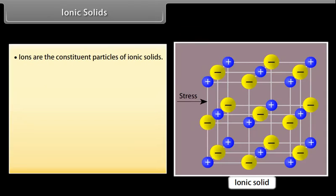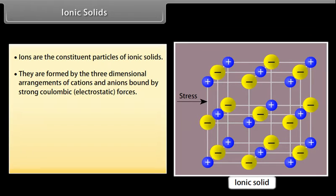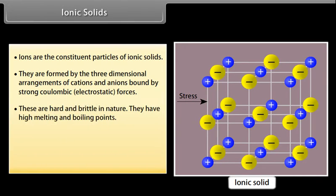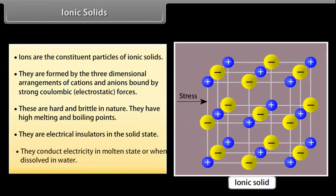Ionic solids: Ions are the constituent particles of ionic solids. They are formed by the three-dimensional arrangements of cations and anions bound by strong coulombic electrostatic forces. These are hard and brittle in nature. They have high melting and boiling points. They are electrical insulators in the solid state. They conduct electricity in molten state or when dissolved in water.